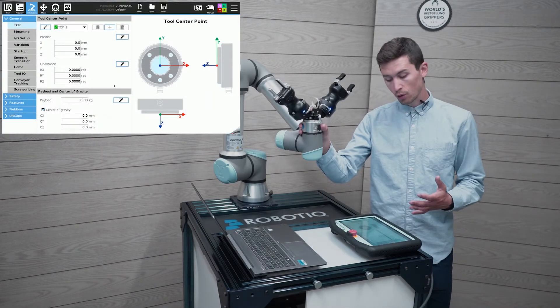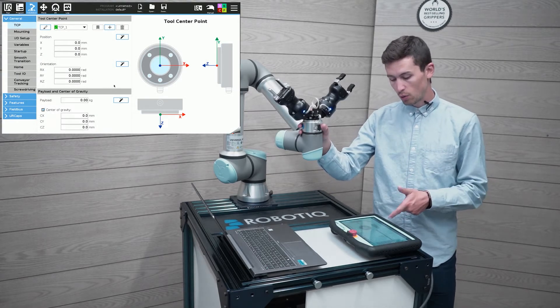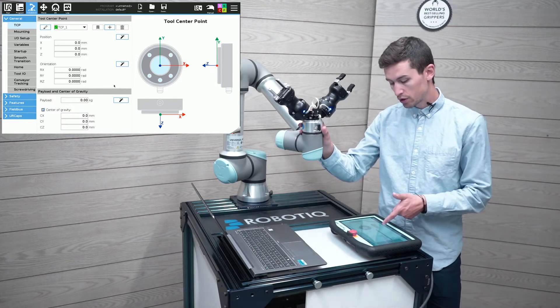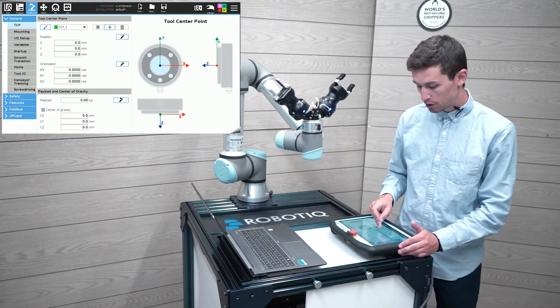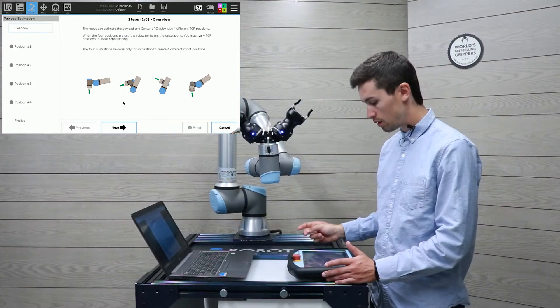So first of all we're going to set the payload using the wizard of the installation tab of the Universal Robot. So I'm just going to click on the wizard tab.